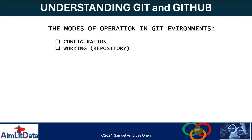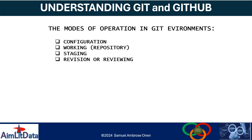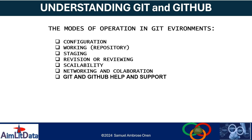Our main targets are: configuring the working environment and staging, understanding revision — how to review the work we have done — and then committing the work. We will also look at creating branches and other things which I term scalability, then the basic sharing of our work with others, which is networking and collaboration. Being connected with Git always — getting Git help, GitHub help, and support — there is a lot of support available.